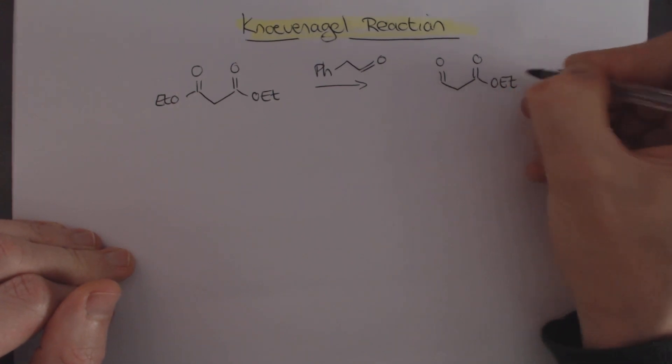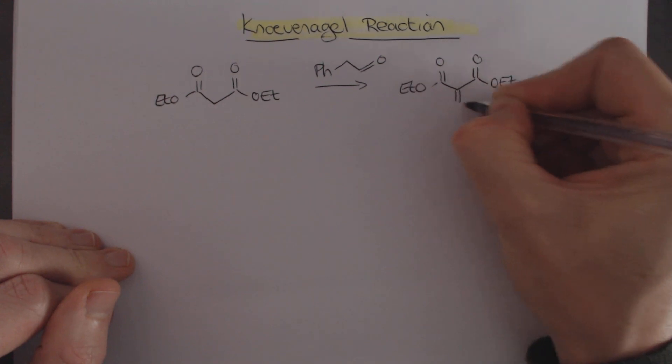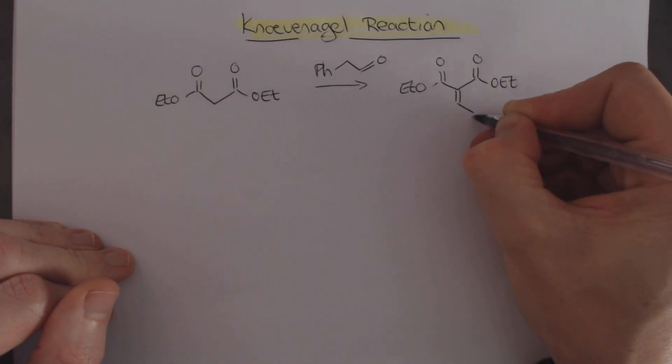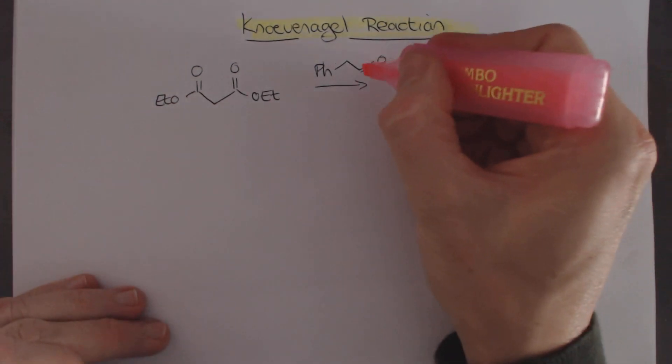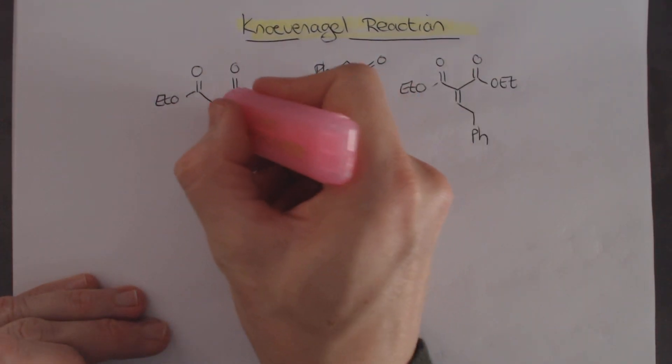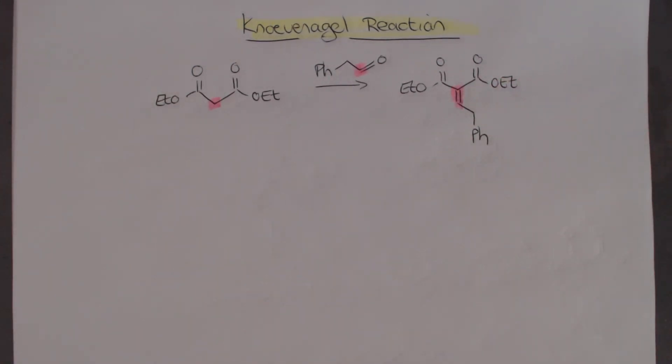We can get a condensation to occur that will give us this product over here, so it's an OEt, OEt, and we will do the aldol condensation and that product would look like this. So here we've got this carbon connecting to that carbon over there and that's the double bond, that's part of the condensation reaction that's occurred.